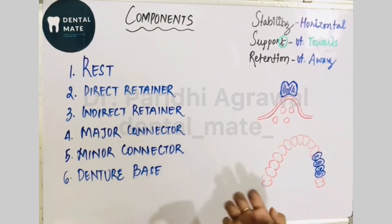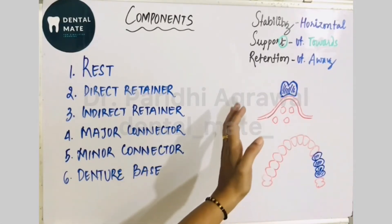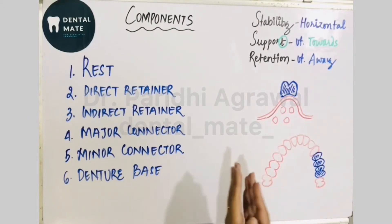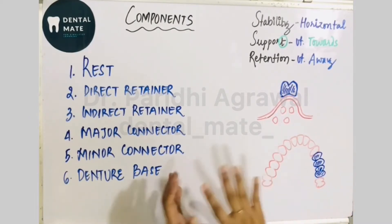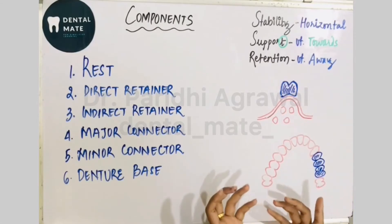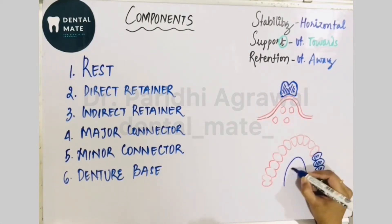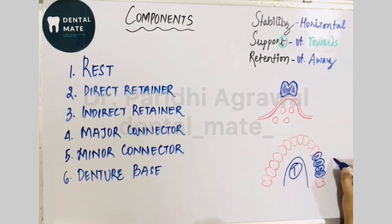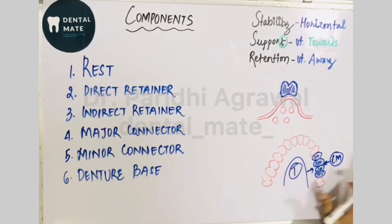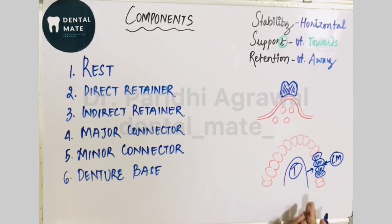Now, stability is the resistance to movement in the horizontal direction — so the prosthesis should not move due to any horizontal force. As shown in this example, the tongue on one side and the cheek muscles on the other try to dislodge the prosthesis horizontally. The resistance capacity of the prosthesis against this movement is called stability. Remember: stability is for horizontal forces.